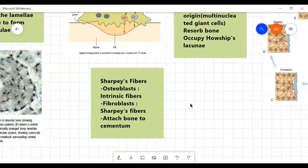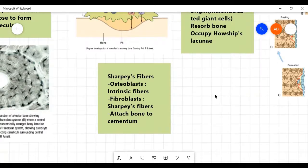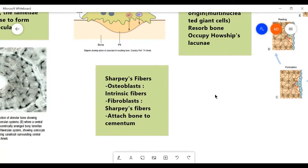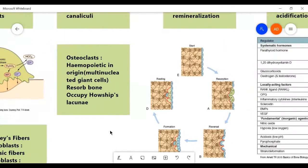Sharpey's fibers are fibers that are secreted by the fibroblasts present in the bone. And osteoblasts secrete the intrinsic fibers. Sharpey's fibers attach the tooth to the bone via the cementum. Basically, the cementum of the tooth is attached to the bone.